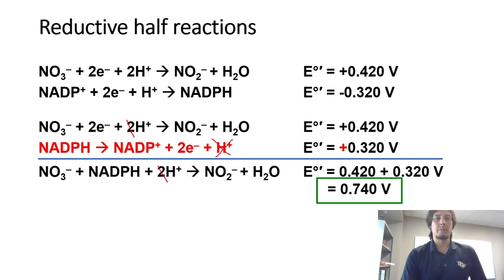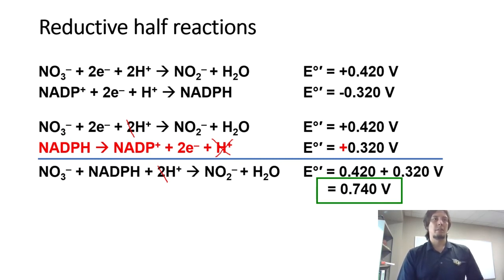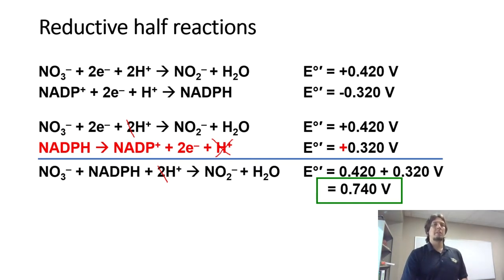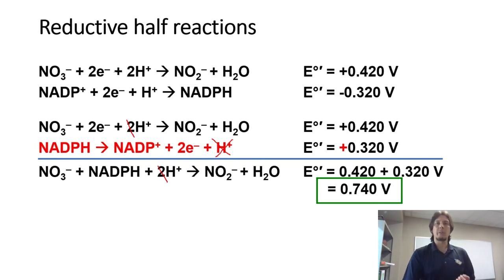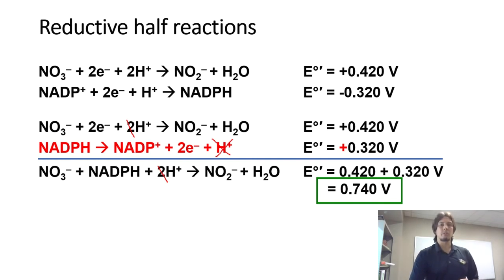After canceling, the correct balanced equation has nitrate, NADPH, and one proton on the reactant side, with nitrite and water on the product side. To get the overall reduction potential for the reaction, we add the two half reduction potentials: 0.420 volts plus 0.320 volts equals 0.740 volts.